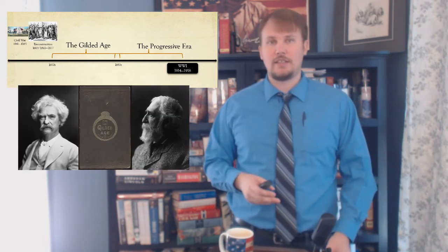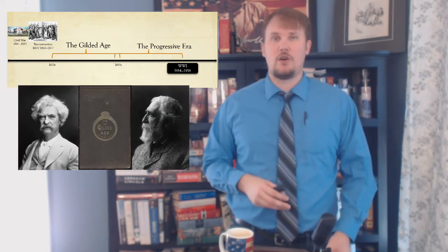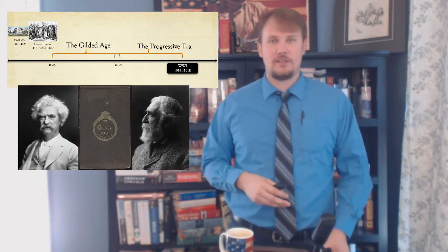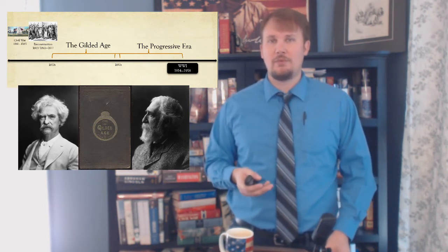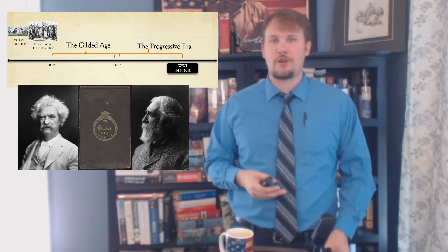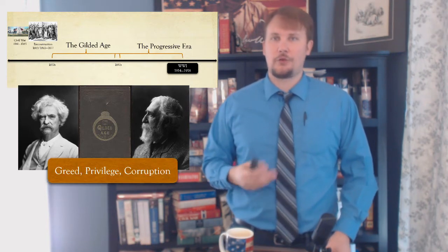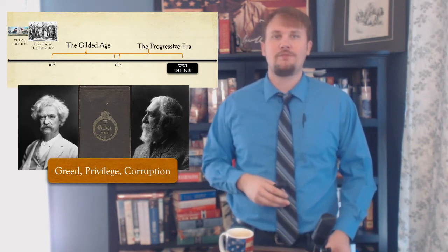The first era we're going to examine in this class is known as the Gilded Age. It occurs from roughly the 1870s into the 1890s. This period gets its name from a book written by Mark Twain and Charles Dudley Warner. The book is called The Gilded Age: A Tale of Today. In that book, the authors brought attention to what they believed were some of the characteristics of the age: greed, privilege, and corruption.